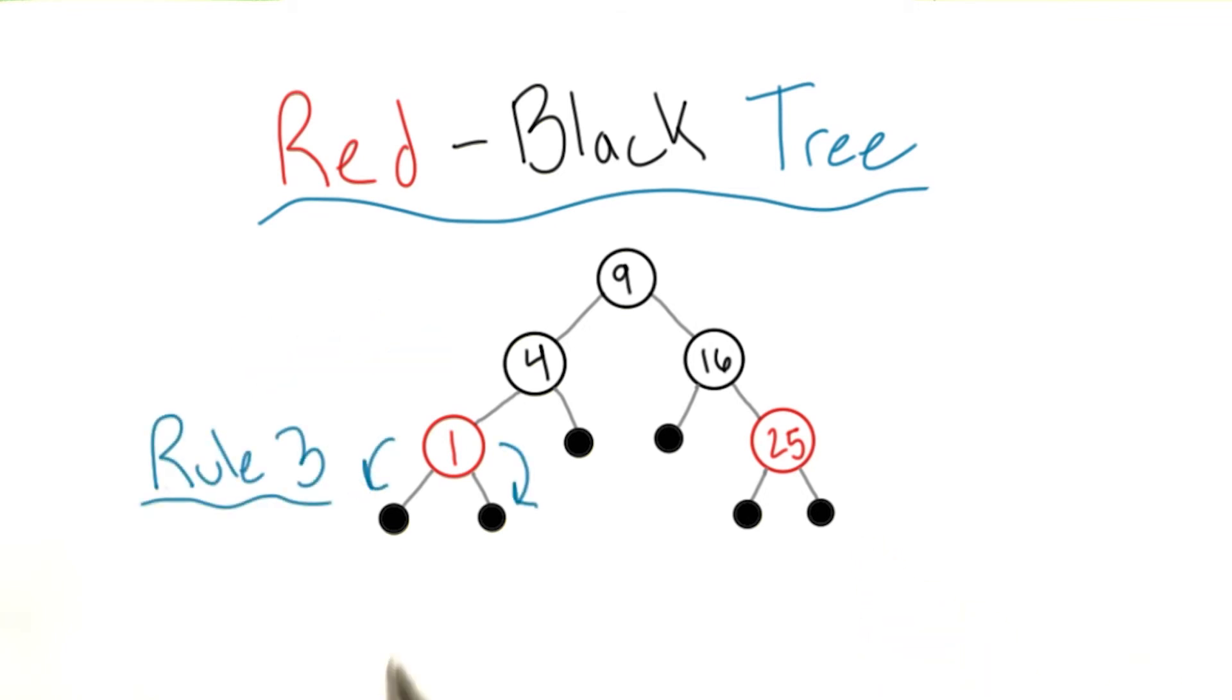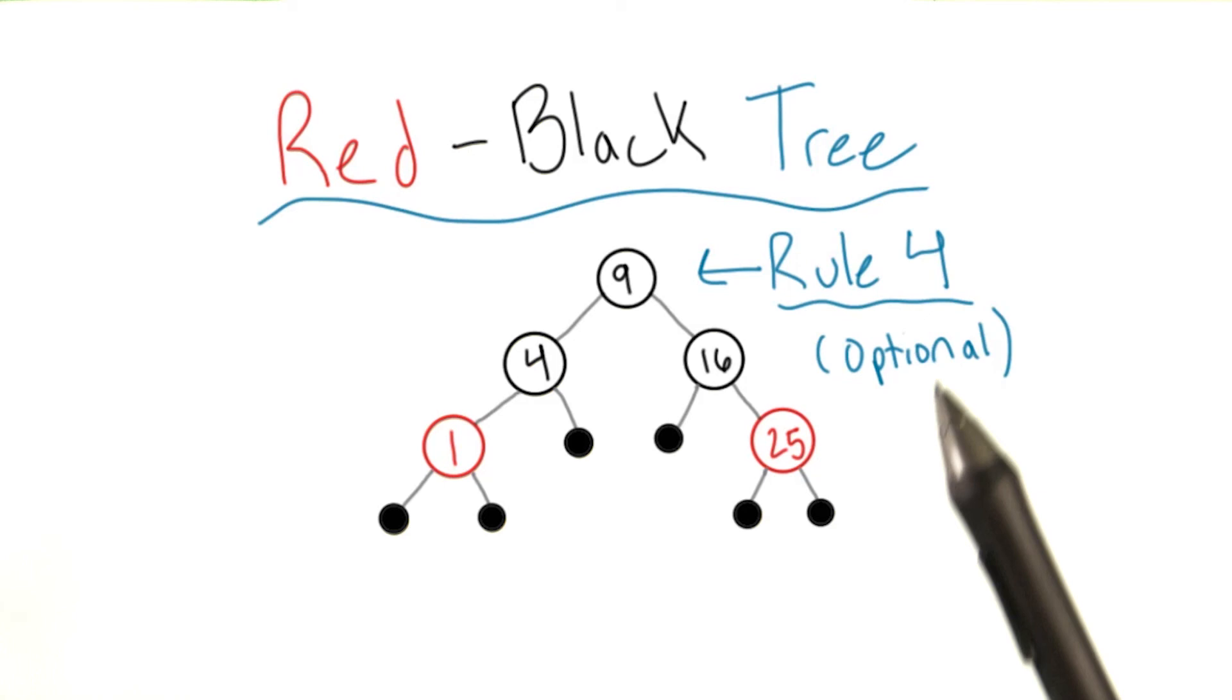Next, if a node is red, both of its children must be black. There's an additional optional rule: the root node must be black.